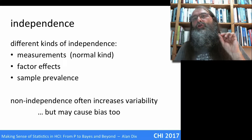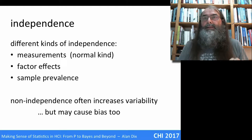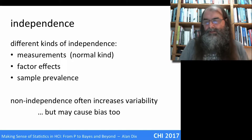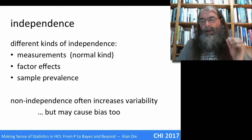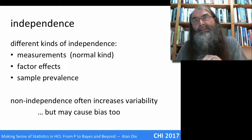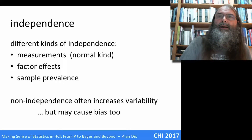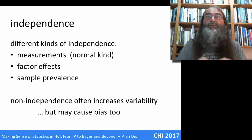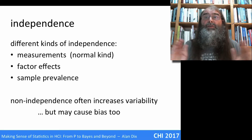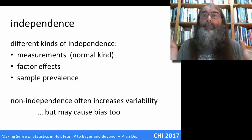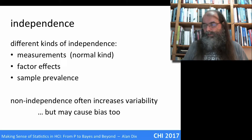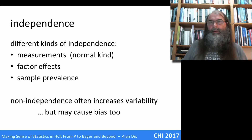Crucially, non-independence — when things aren't independent — increases variability, and sometimes it can create bias as well. But the big effect of non-independence is often to change variability, and typically to increase it, and we'll explain why that happens in a bit.